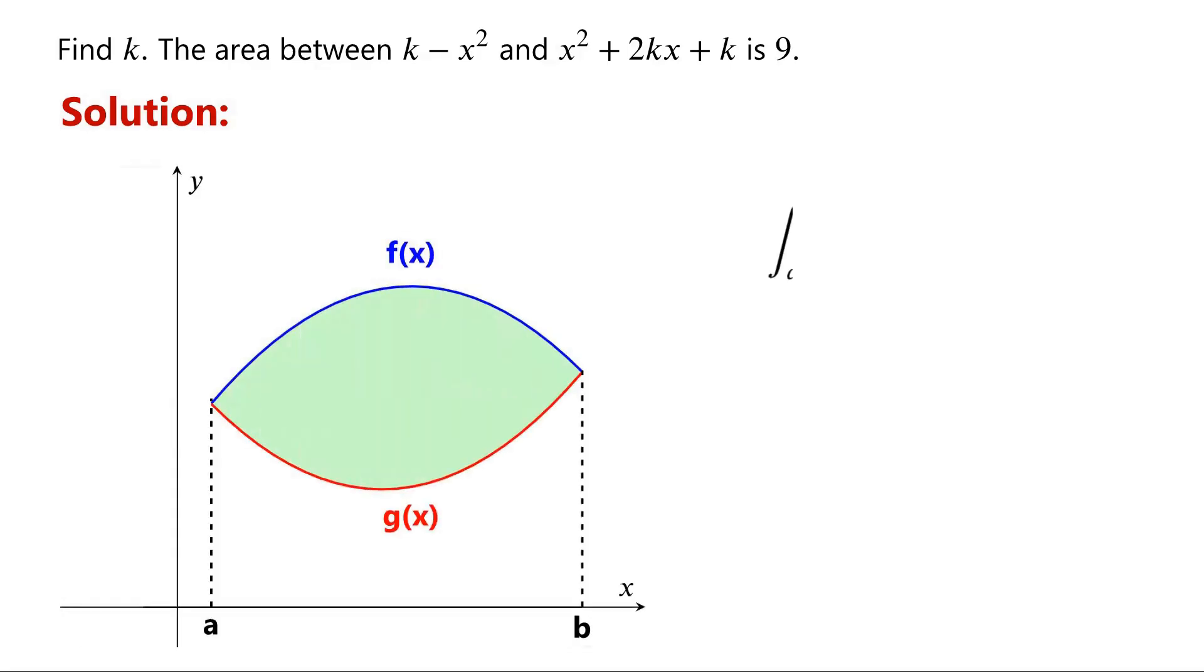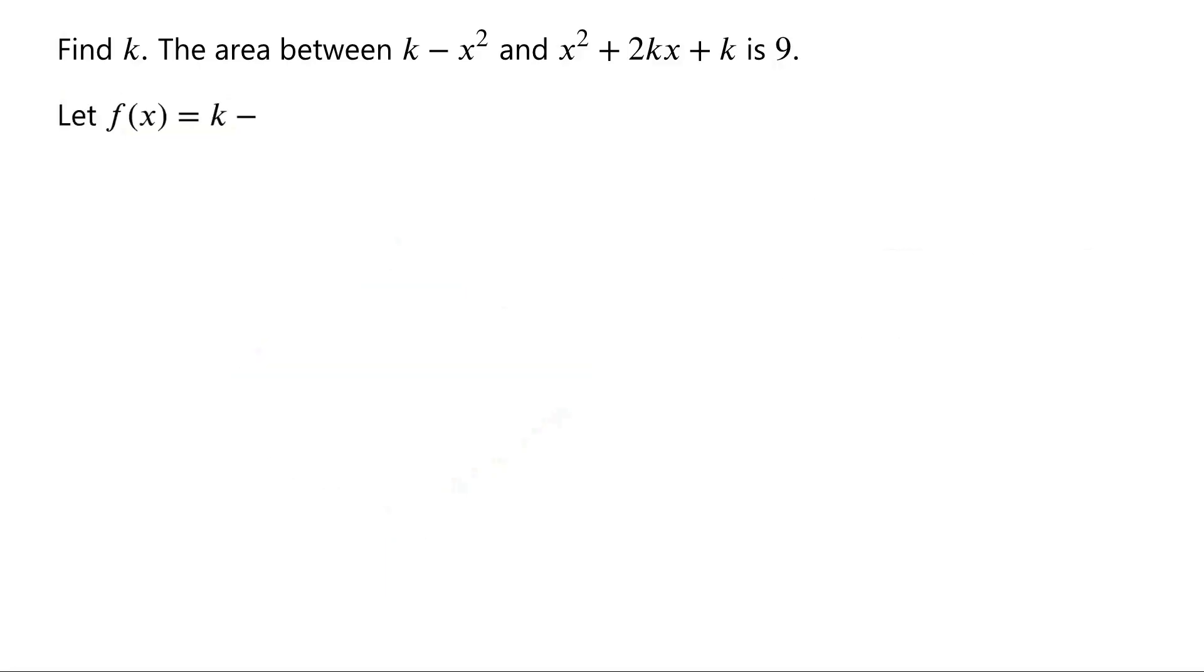Then, the area between the two curves is equal to the difference of the two integrals, which is equal to the integral of the difference of the top and bottom functions. We let f of x equal k minus x squared, and g of x equal x squared plus 2kx plus k.